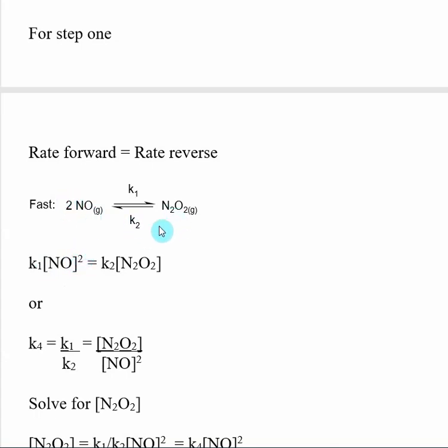The same thing for the reverse reaction. Rate equals K, in this case the reverse reaction is K2, times my reactant for the reverse reaction which is my N2O2.